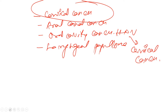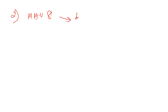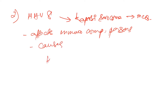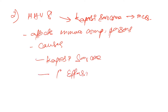Next, Human Herpes Virus 8 (HHV-8). It causes Kaposi sarcoma — this is a key MCQ to remember. It affects immunocompromised persons. HHV-8 causes Kaposi sarcoma and also causes something known as primary effusion lymphoma.